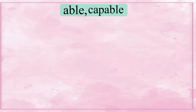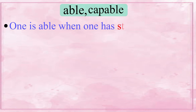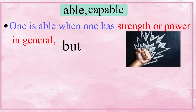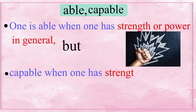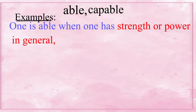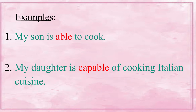We are generally confused with the words Able and Capable. Both the words have different meanings. One is able when one has strength or power in general. But one is capable when one has strength or power to do a particular thing. To understand, repeat these sentences after me.